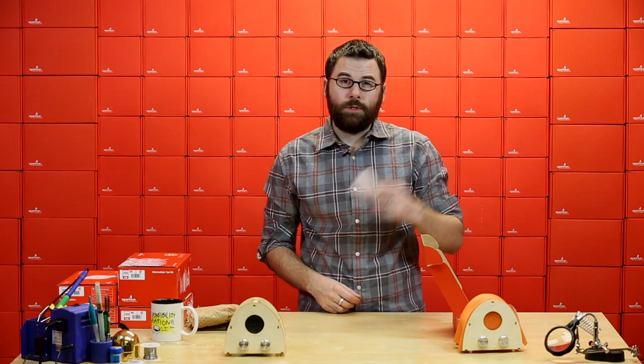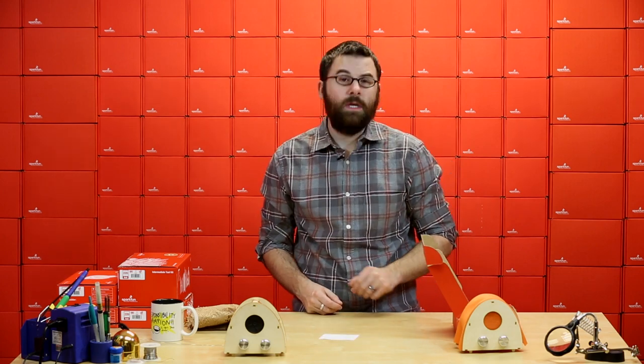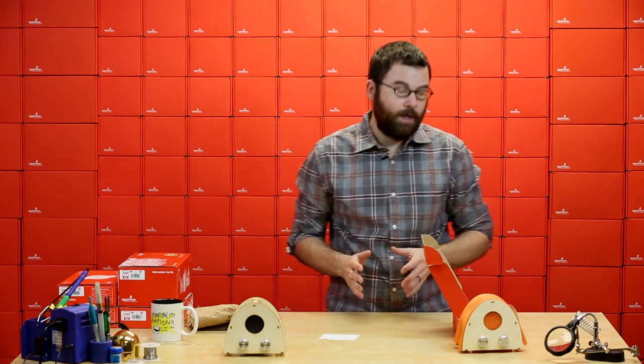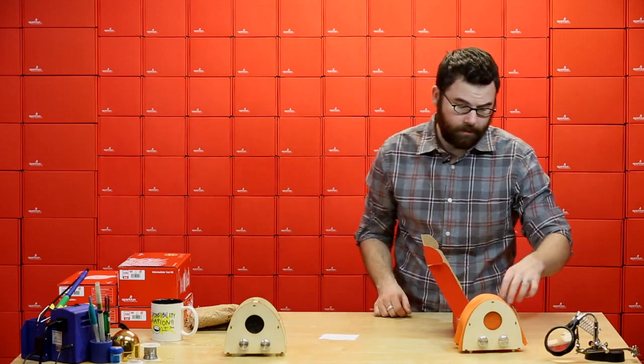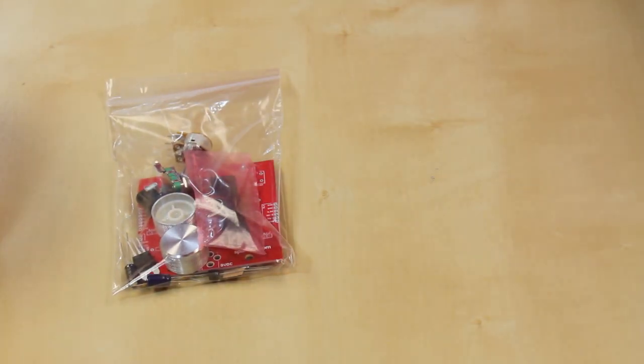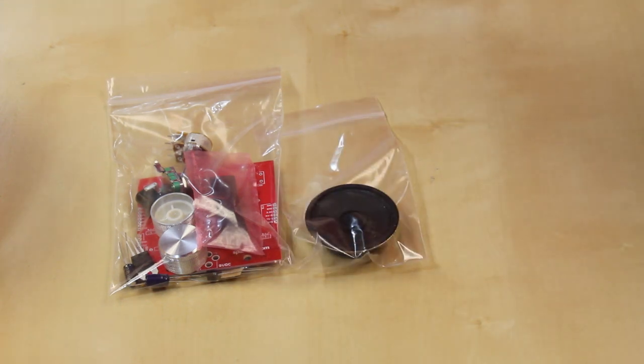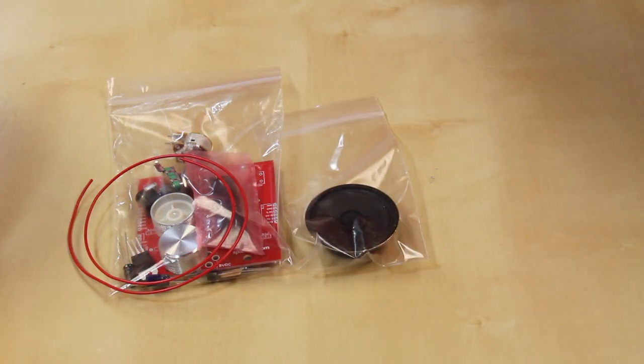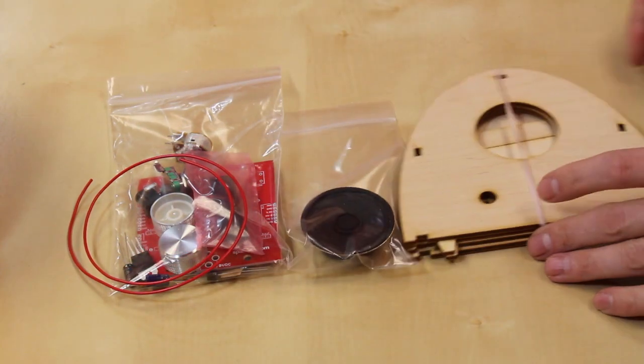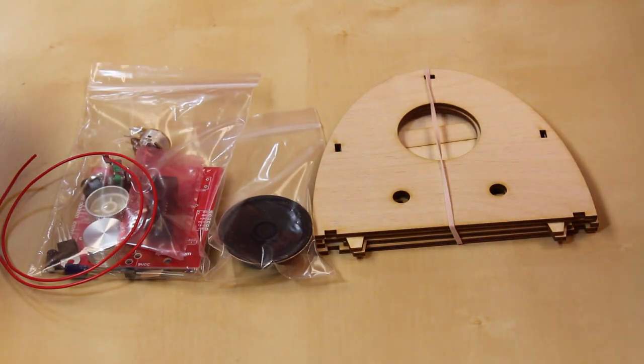Inside we've got this little slip of paper that just directs you to the instructions. I believe it goes to the GitHub repository which has a lot of information and some assembly instructions. And then we've got the PCB and all the components. We've got the speaker, length of wire for the antenna, and then all the laser cut wood pieces right there.